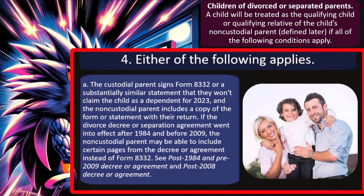Number four, either of the following applies. A: the custodial parent signs Form 8332, or a substantially similar statement, that they won't claim the child as a dependent for 2023, and the non-custodial parent includes a copy of the form or statement with their return.